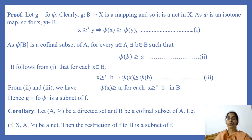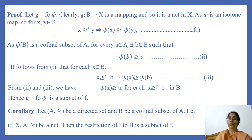Let G = F ∘ ψ. Clearly G is a function from B to A, and F is a function from A to X, so G is a function from B to X. And since B is a directed set, G is a net in X.